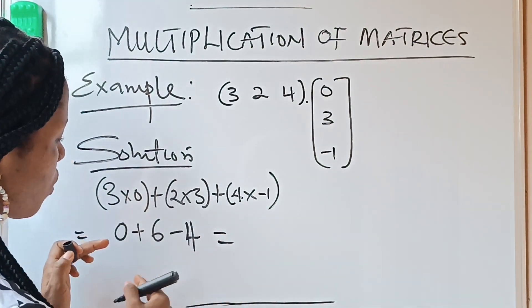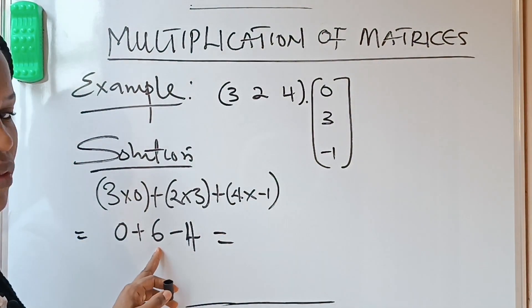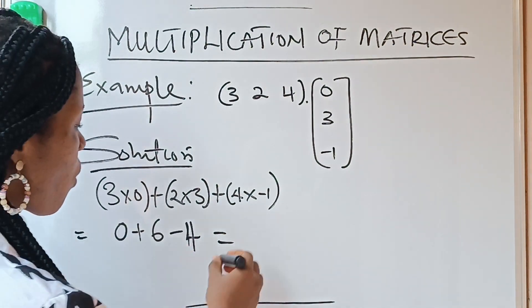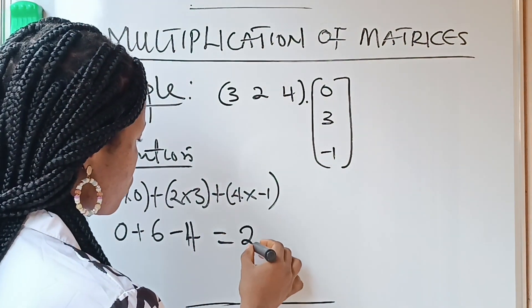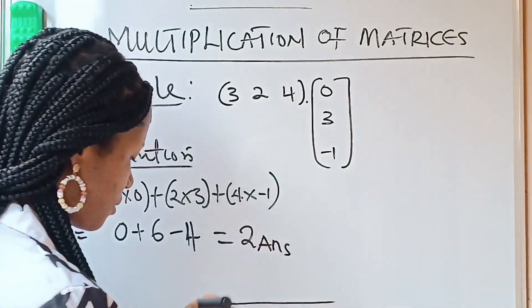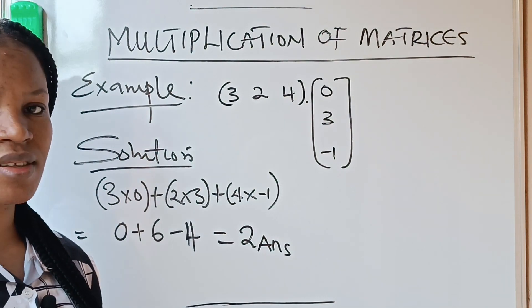So we go ahead to solve this: 0 plus 6 will give you 6, and 6 minus 4 will give you 2. And this becomes your answer. Very easy, right?